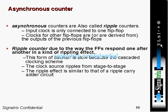Now, coming to asynchronous counters. As I explained, asynchronous counters have a rippling effect, so you can call them ripple counters. The ripple counter is slow because of the cascaded clocking scheme, where the output of the first flip-flop acts as the clock input for the next flip-flop.